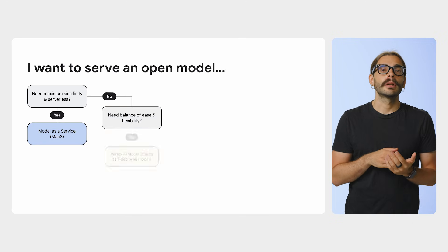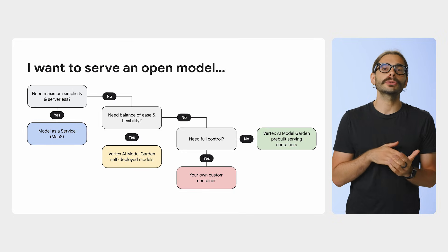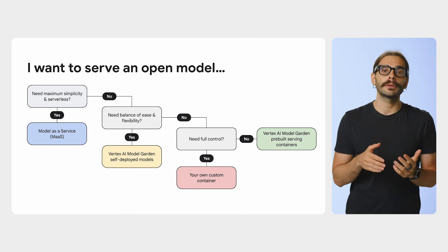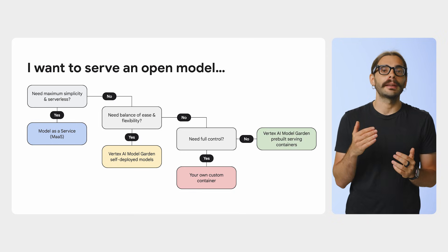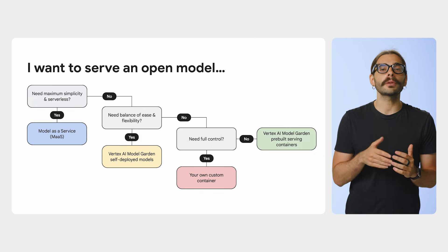So you need to serve an open model. The first thing to ask is: how much control do you need versus how much simplicity do you want? This decision tree will be our guide for the entire series. We will walk through each path today at a high level, and in future videos we will deep dive into each of them with hands-on code.